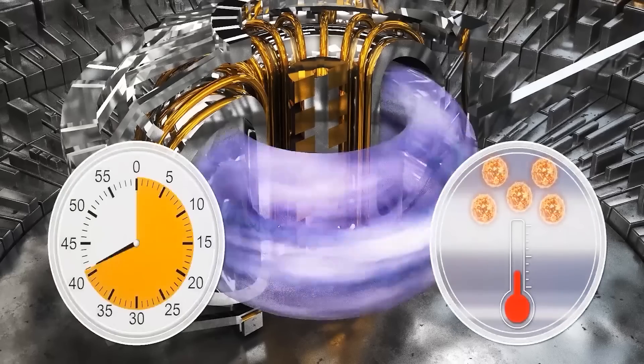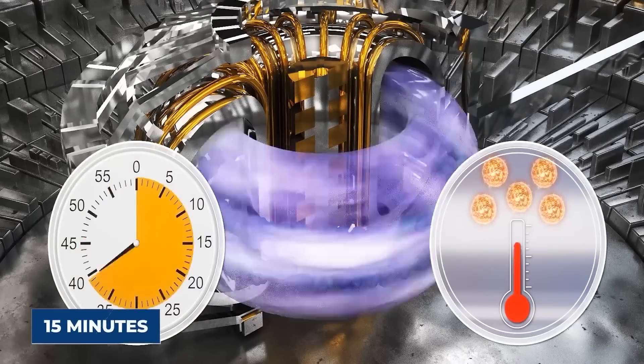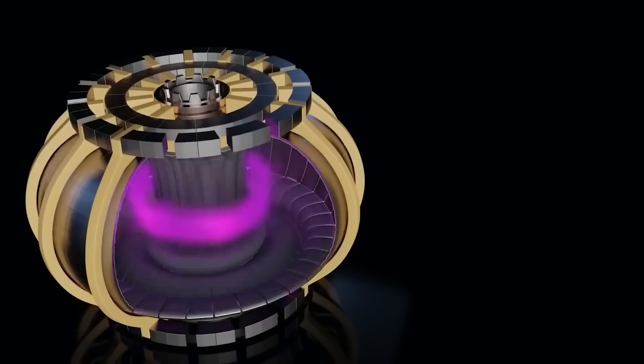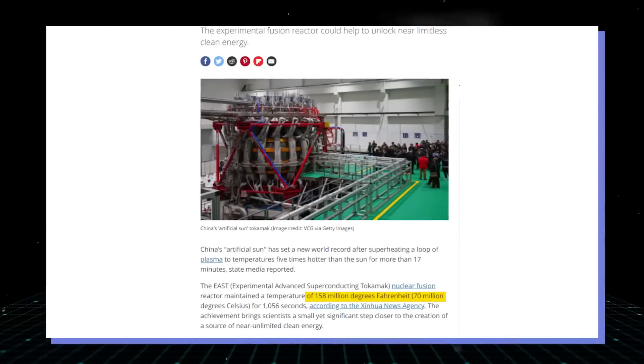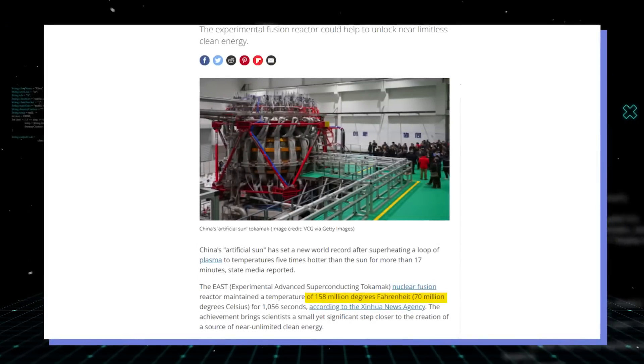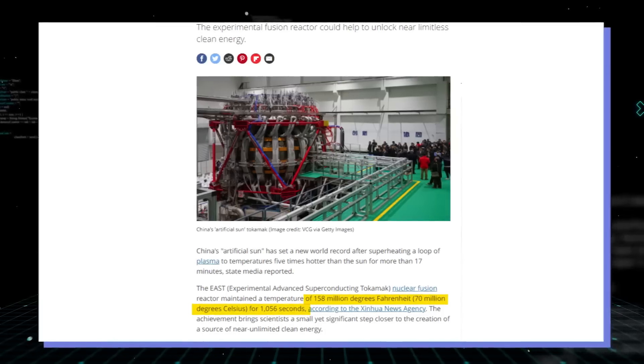China's sun was able to superheat a loop of plasma to five times hotter than the sun for more than 15 minutes. The reactor, known as EAST or Experimental Advanced Superconducting Tokamak, maintained a temperature of 158 million degrees Fahrenheit or 70 million degrees Celsius for 1,056 seconds.